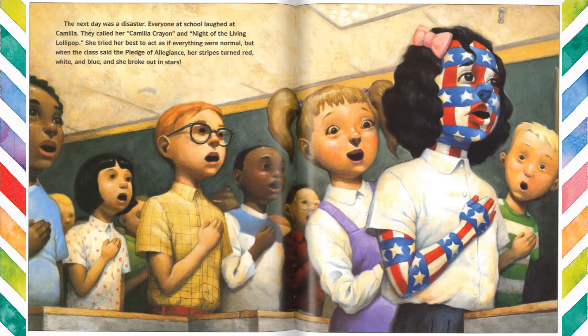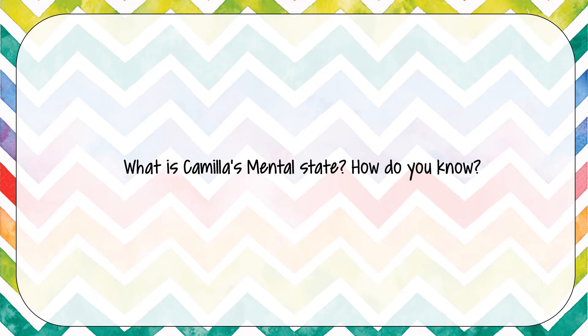The next day was a disaster. Everyone in school laughed at Camilla. They called her Camilla Crayon and Night of the Living Lollipop. She tried her best to act as if everything was normal. But when the class said the Pledge of Allegiance, her stripes turned red, white, and blue, and she broke out in stars. What is Camilla's mental state? How do you know?